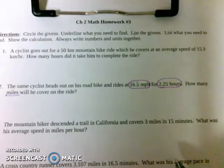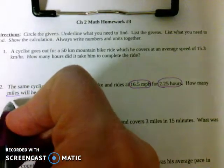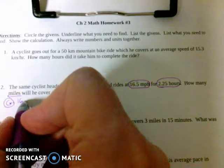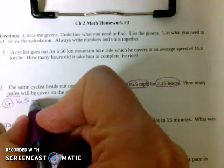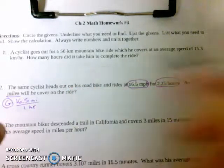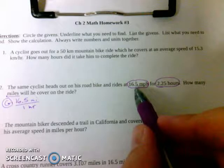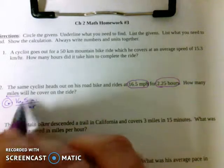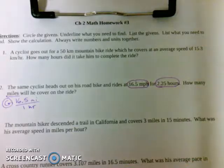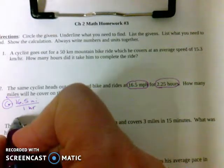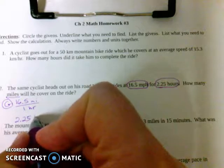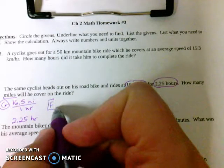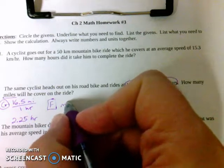I'm using a purple pen. So over here, I'm going to write G for given. I'm going to put a circle around it. I'm going to write my two givens down. 16.5 miles over one hour. There's my first given. 16.5 miles per hour is 16.5 miles in one hour.